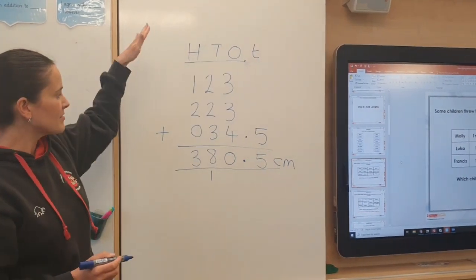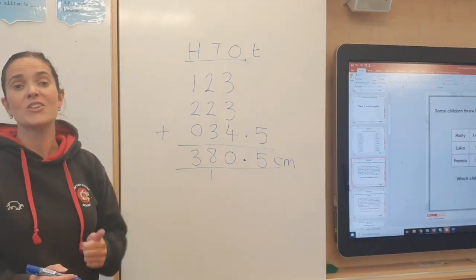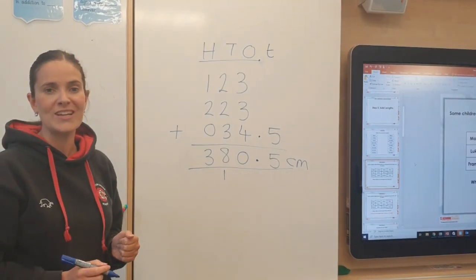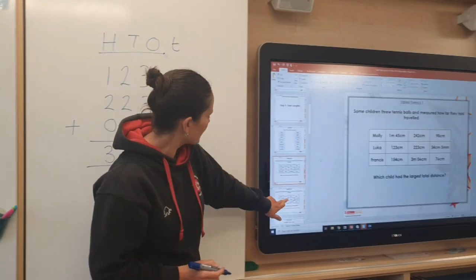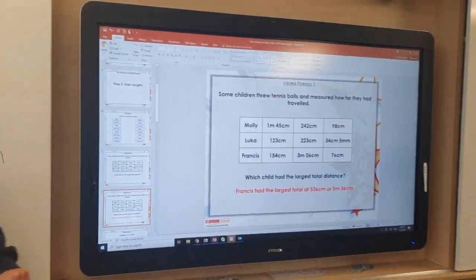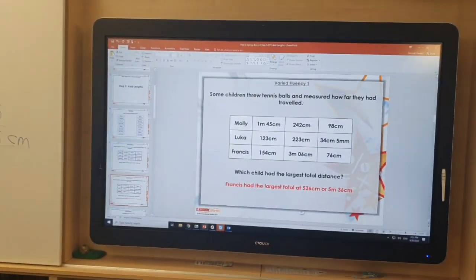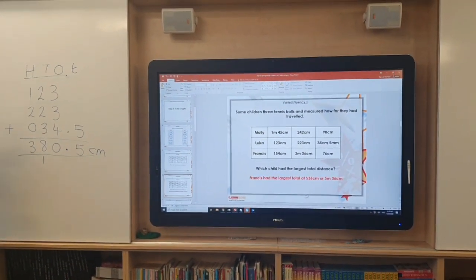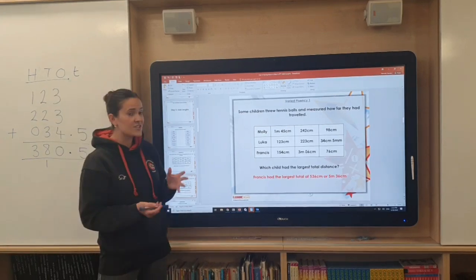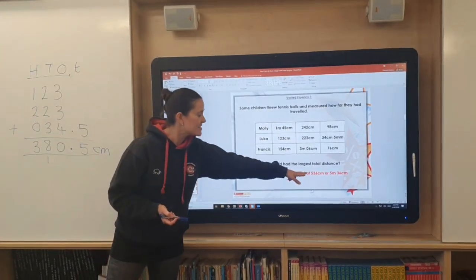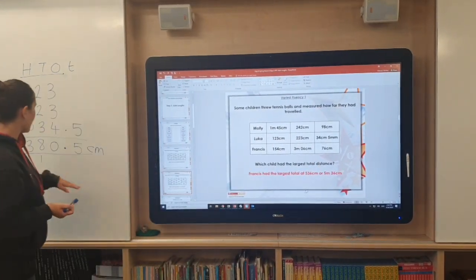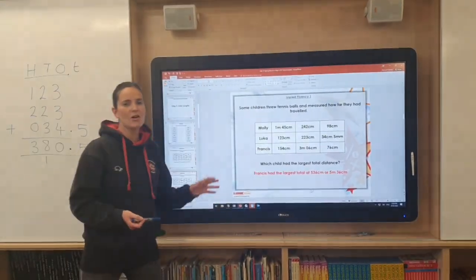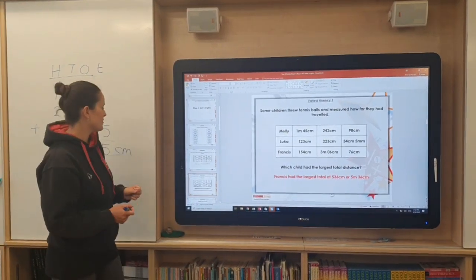So Luca threw in total 380.5 centimetres. And once you've done that process for each of the 3 children you will be able to tell which child has thrown the longest distance. And if we just show you the answer to that question it was in fact Francis who had thrown the longest distance. You can give your answers just so you know either in centimetres like I have here or you could convert your answer into metres and centimetres. Both ways of doing it are absolutely fine.